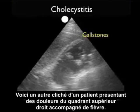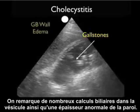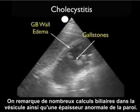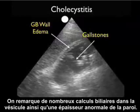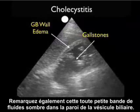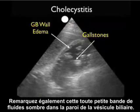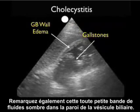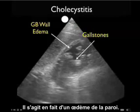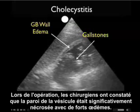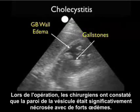Here's another patient who presented with right upper quadrant pain and fever. Notice the large amount of gallstones present within the lumen of the gallbladder and the thickened anterior gallbladder wall. We can appreciate a very small black stripe of fluid in the interior part of the gallbladder wall — this represents gallbladder wall edema. At surgery, the surgeons found that the wall of the gallbladder was significantly necrotic and edematous.